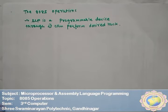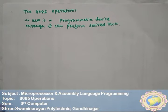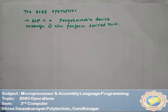This is known as fetch, decode, and execute. First, it reads the instruction — that is fetch. Then decode: to analyze which type of manipulation is to be done. Then the manipulation is performed — that is known as execute. The result of the manipulation is stored in memory and sent to the output device.